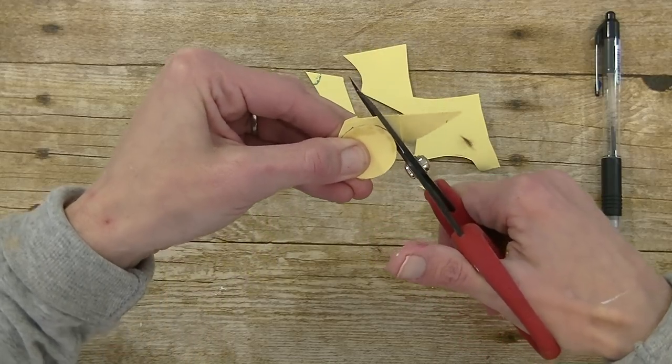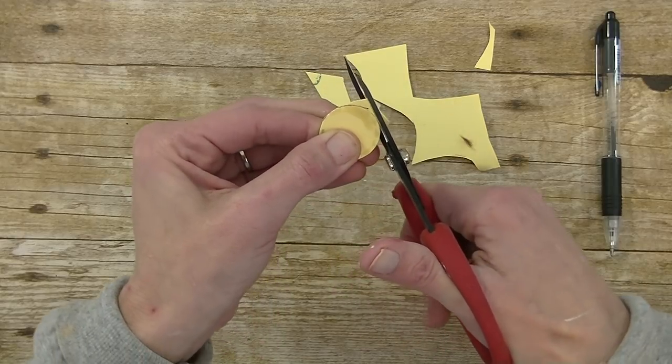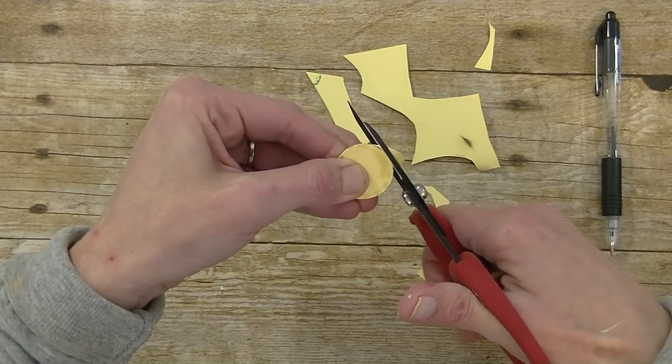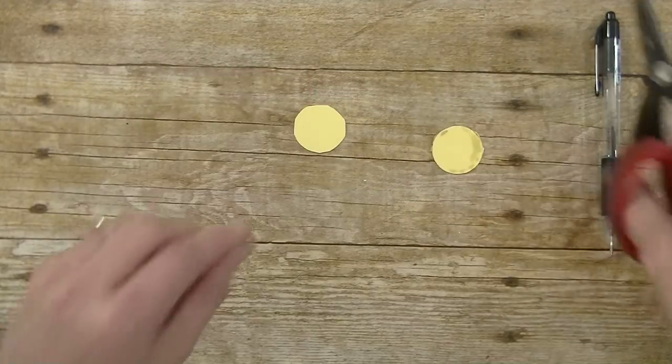Plus it gives more durability to our little critter there. Okay finish that. Go all the way around. Okay get rid of that. So now we have our two pieces.